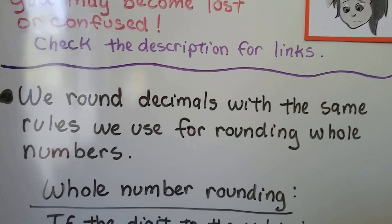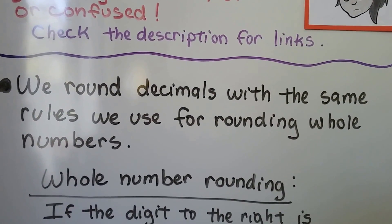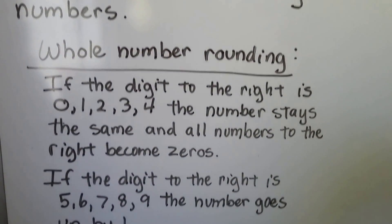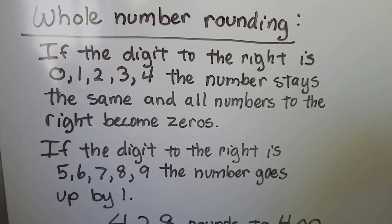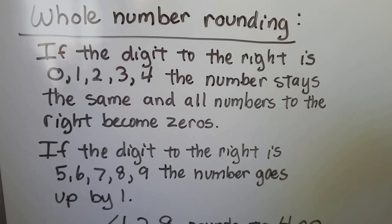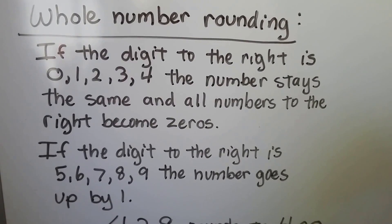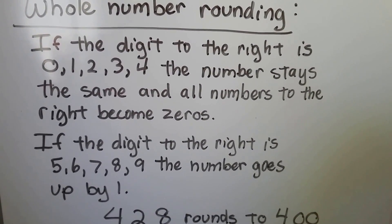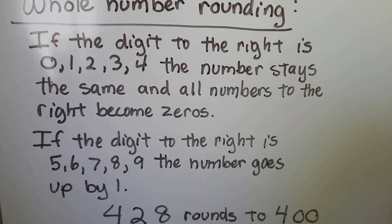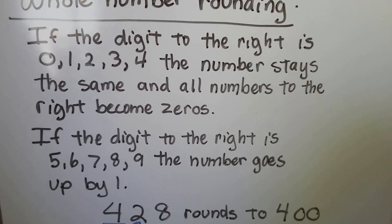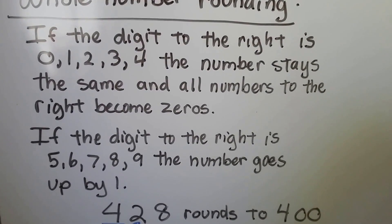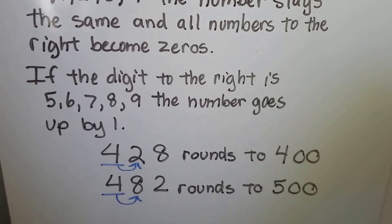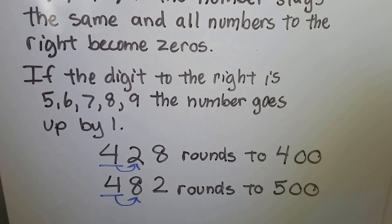We round decimals with the same rules we use for rounding whole numbers. When we do whole number rounding, if the digit to the right of the place value we're rounding to is a 0, 1, 2, 3, or 4, the number stays the same and all the numbers on the right become zeros. And if the digit to the right is a 5, 6, 7, 8, or 9, the number goes up by 1.